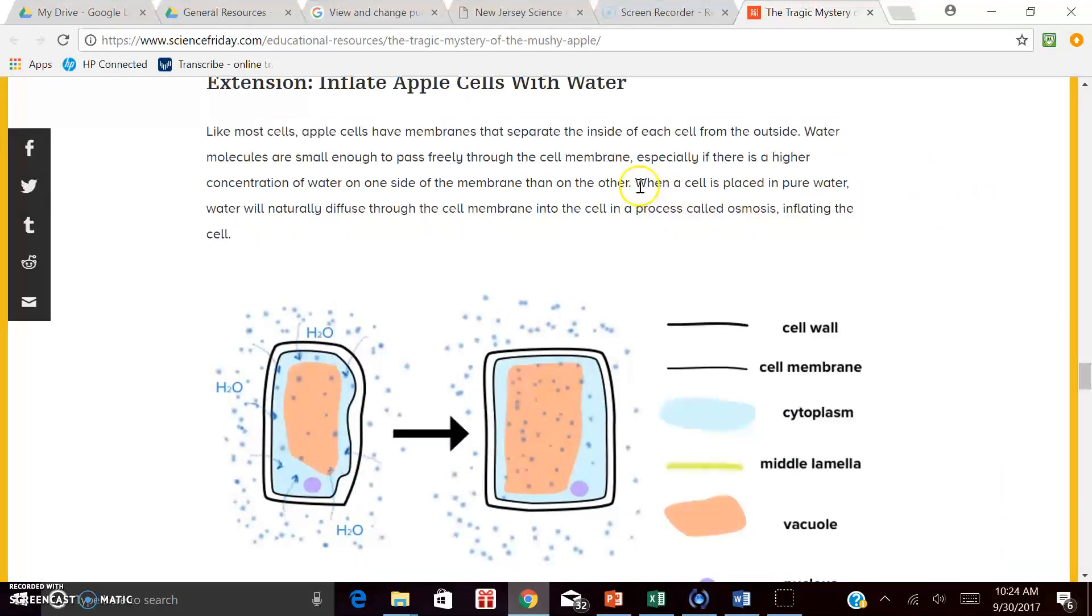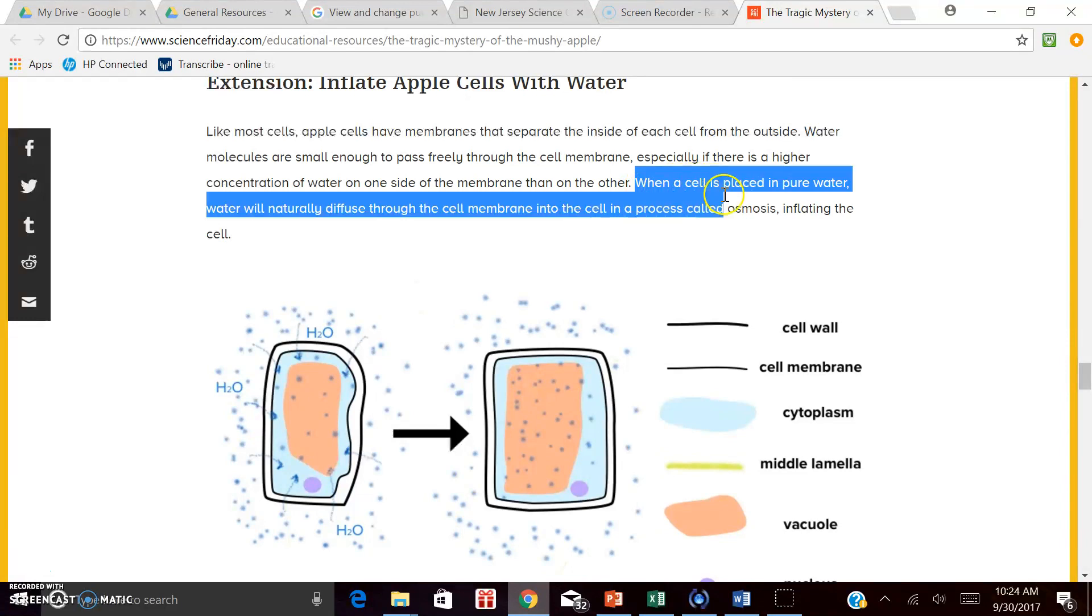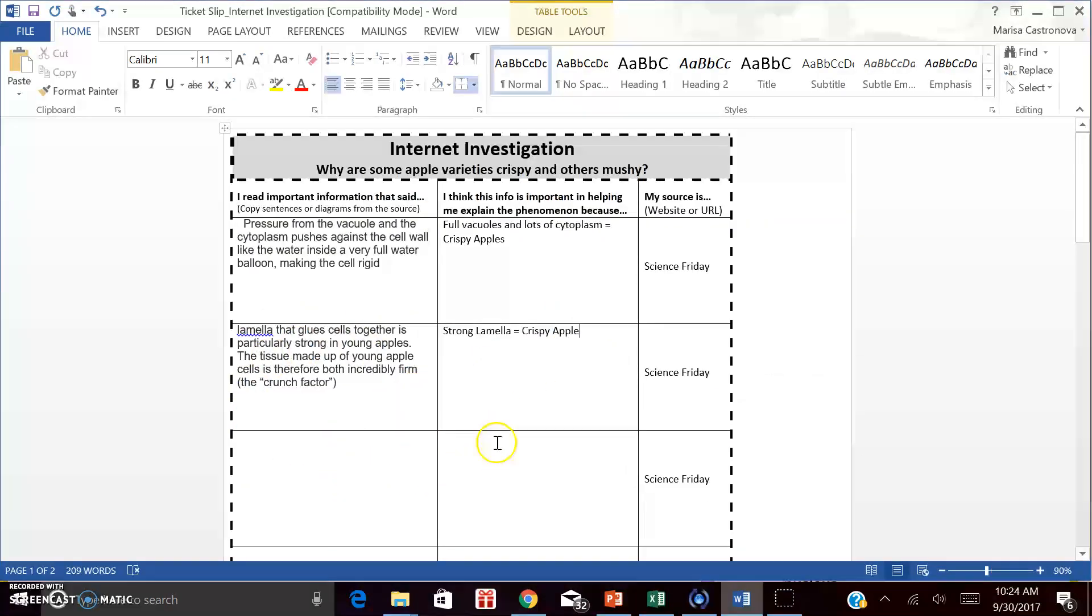Here, the one sentence that really stood out to me is it said when a cell is placed in water, that water is going to want to come through the cell membrane in a process called osmosis and inflate the cell. I would take this piece and put it into your ticket slip. To interpret it, take a look at the diagram. You can see the water molecules coming past the two boundaries and coming and inflating this vacuole. As this vacuole gets bigger, it pushes against these boundaries, making the entire cell rigid and firm. You can clearly see the difference between this cell, which looks flimsy, and this cell, which looks rigid. Take a moment to insert the diagrams and the information into your ticket slip now.